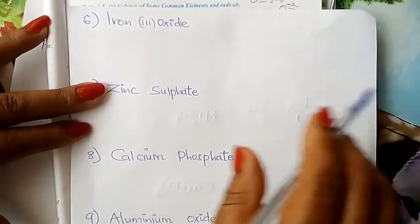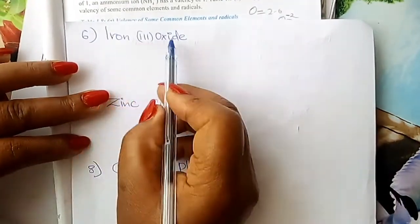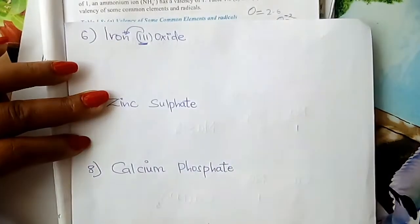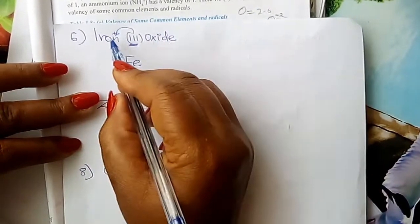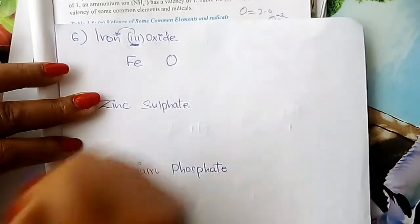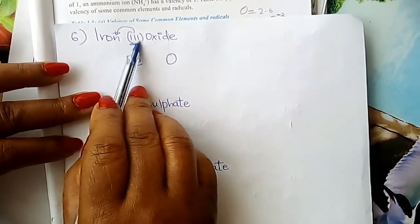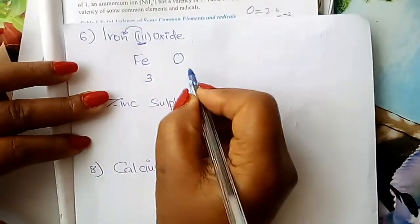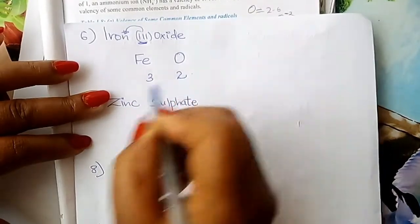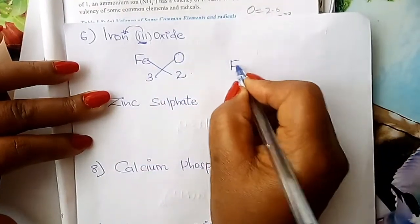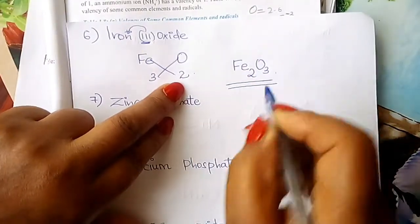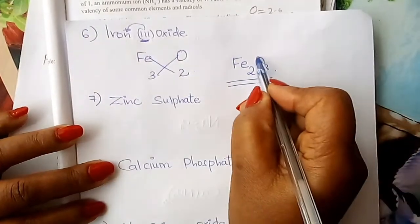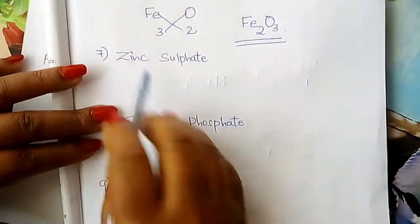Iron(III) oxide is a compound of iron and oxygen. The three refers to the valency of iron. Iron's symbol is Fe; oxygen is O. Valency for iron is three; valency for oxygen from our song is two. Interchange: Fe takes two and O takes three. The formula of iron(III) oxide is Fe2O3.